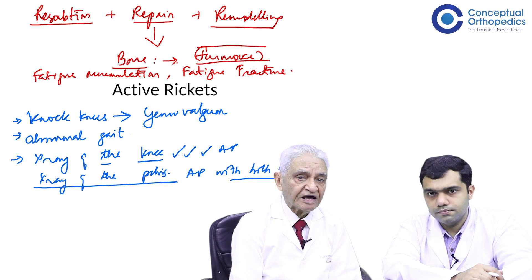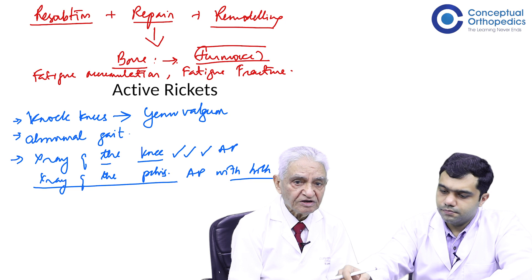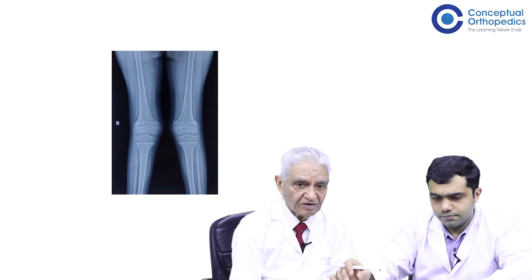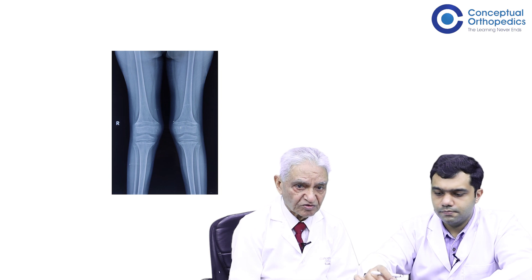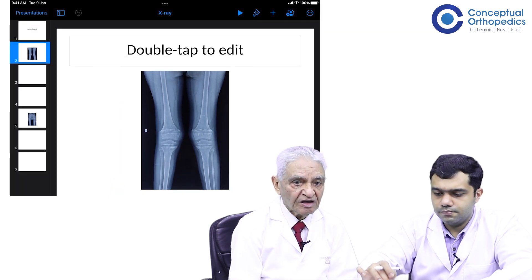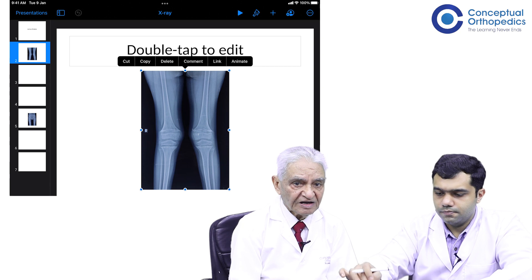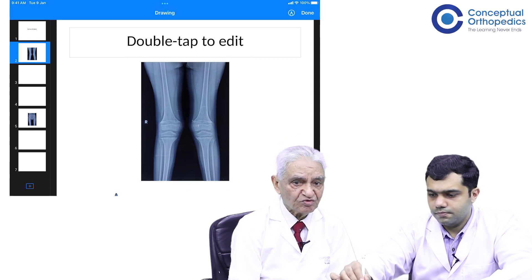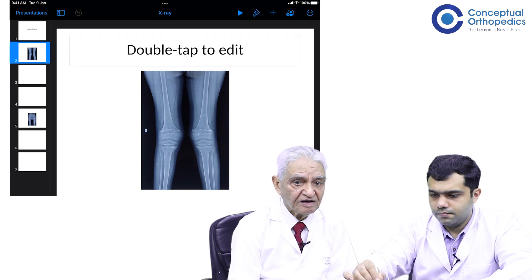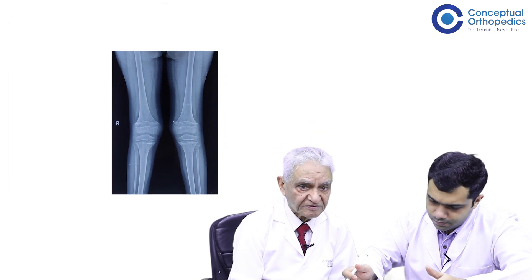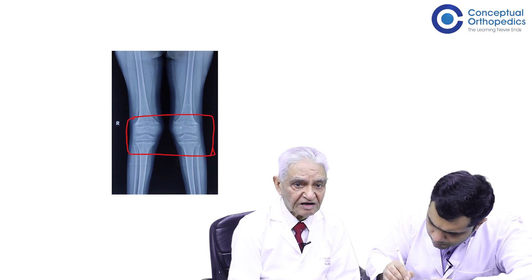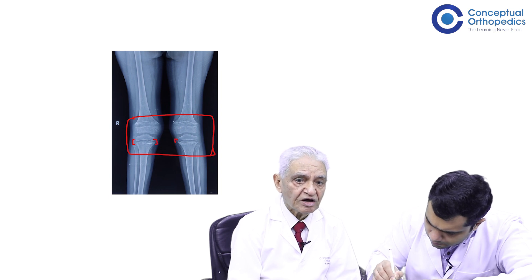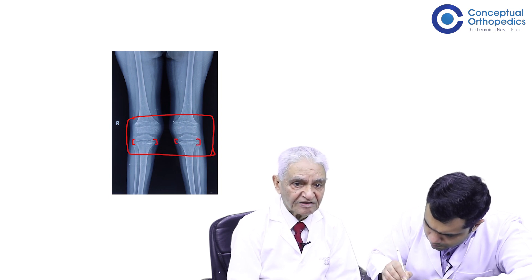If you look at the x-ray of this patient, looking at the knee joint, there is a very typical active rickets picture — that would be the diagnosis. Look at the growth plate. It seems that the growth plate has widened; it is thicker than the normal growth plate. The second finding is that the metaphyseal area is expanded — this is called cupping or flaring.